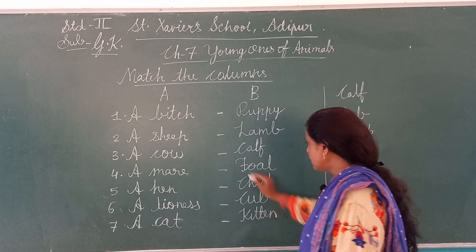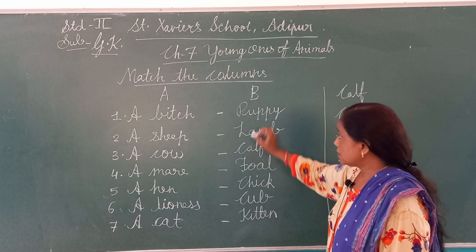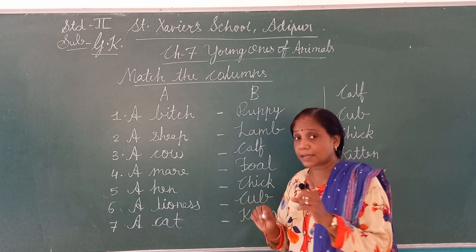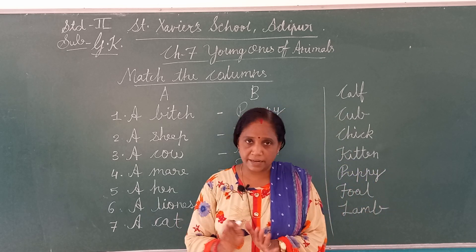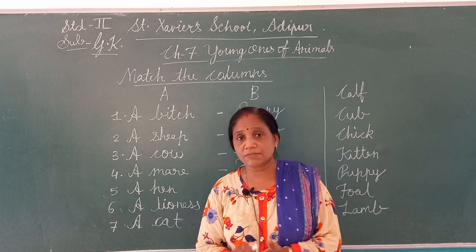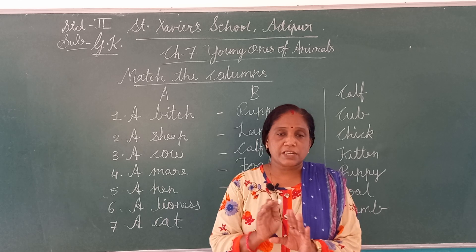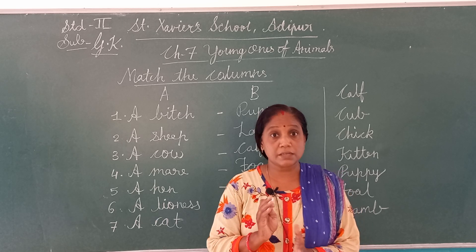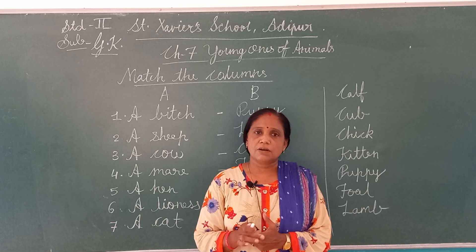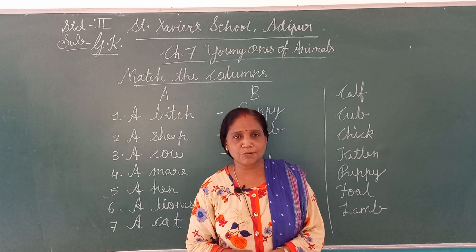और यह जो भी हमने लिखा — Puppy, Lamb, Calf, Foal, Chick, Cub, Kitten — इनका first letter capital रखना, small से नहीं start करना। So dear students, यह हमारा matching complete हो गया और chapter number 7 — Young Ones of Animals — वो भी complete हो गया। आपकी textbook की exercise complete कर लो, with good and neat handwriting, और एक बार rough book में भी लिख लो for practice. We will meet in the next video with our new chapter. Till then, goodbye, stay home, stay safe. Thank you.